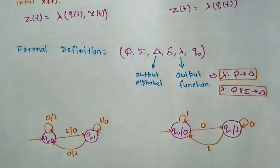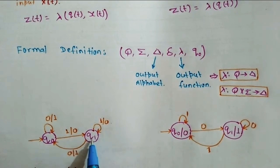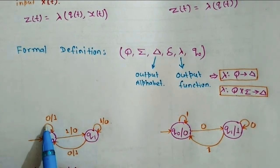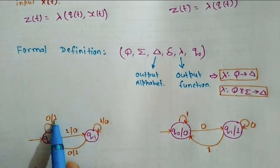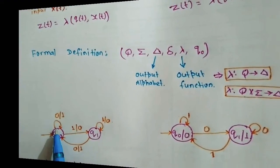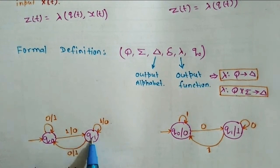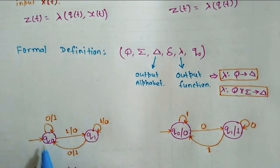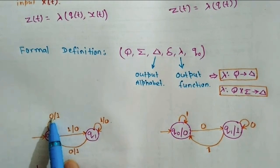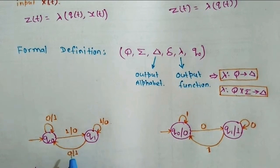Here we have two states, q0 and q1. After reading symbol 0, it produces an output and goes to the same state q0. After reading 1, it produces output 0 and goes to state q1. The output depends on both the state and the input, so this model is known as the Mealy model or Mealy machine.